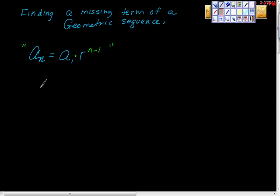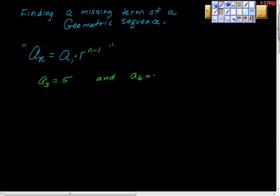The problem we have today offers us some information. It says that the third term — you can read it as a sub 3 — is equal to 5, and the 6th term is equal to negative 40.